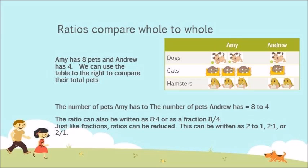In this example, Amy has 8 pets and Andrew has 4. We can use the table to the right to compare their total pets. The number of pets Amy has to the number of pets Andrew has is equal to 8 to 4. The ratio can also be written as 8:4 or as a fraction 8/4.